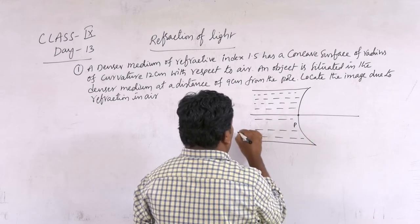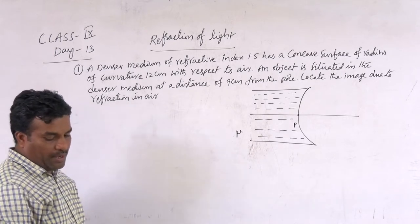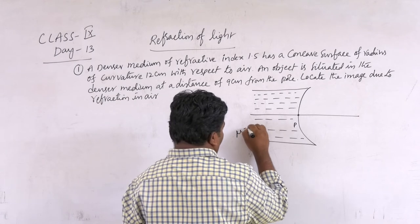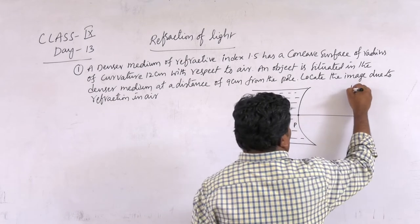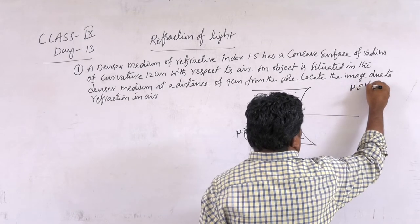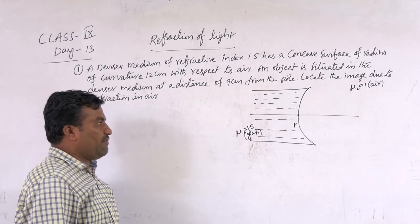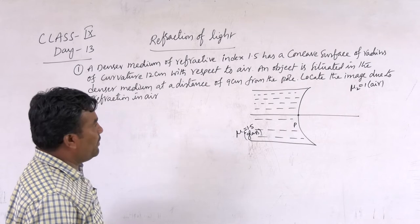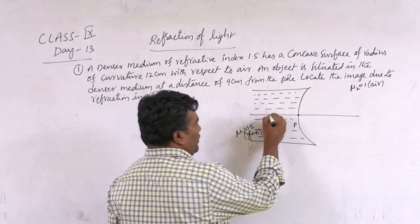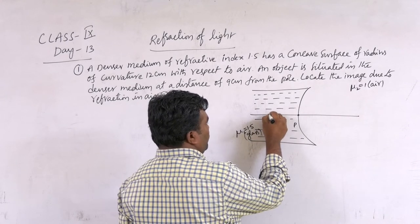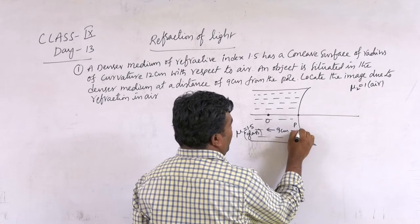First of all, refractive index — the initial medium is glass, μ1 = 1.5. Here it is the refractive index μ1, because the incident rays travel from denser medium to rarer medium. An object is situated in the denser medium at a distance of 9 cm. So this is the object. Object distance is 9 cm from cone.